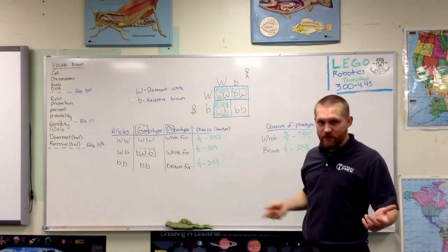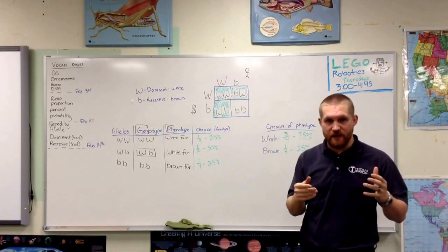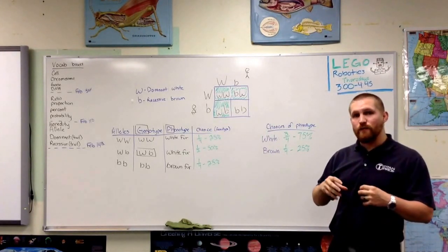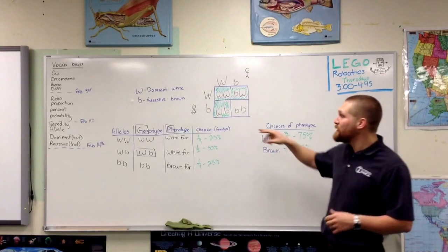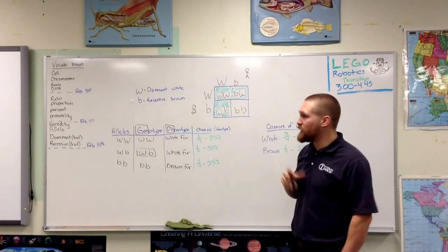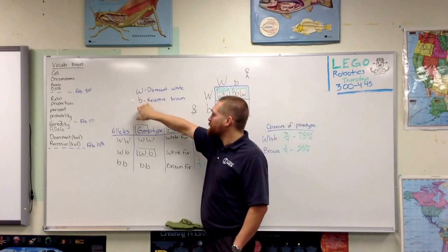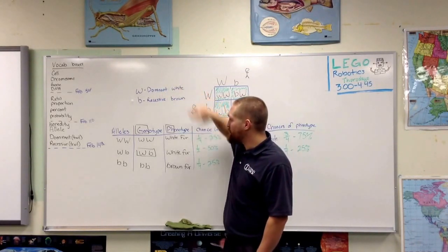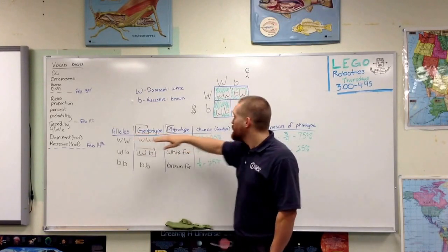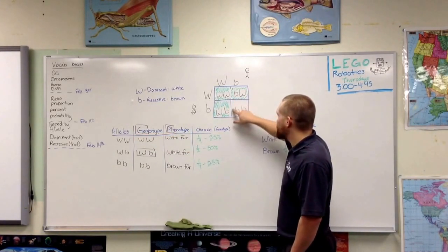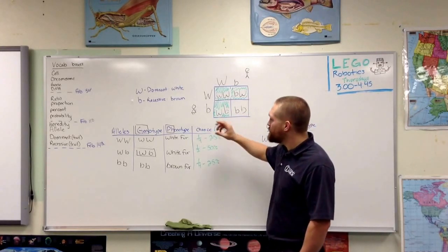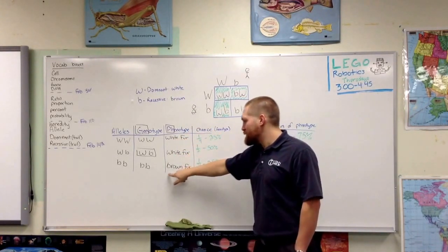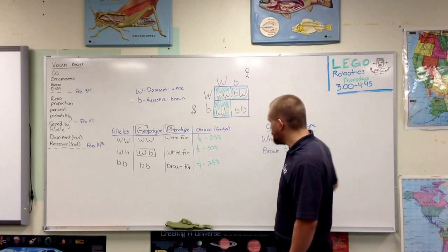Brown is what we would call a recessive gene. If this was real life, we would expect to see a lot more white fur bunnies than brown — just like we see more brown-haired people than blonde-haired, or more brown-eyed people than blue-eyed, because that is a recessive gene: it doesn't occur as often because there have to be two alleles. Alleles are different types of the same gene. Genotype refers to the alleles something has; phenotype are the physical characteristics — what you would see.